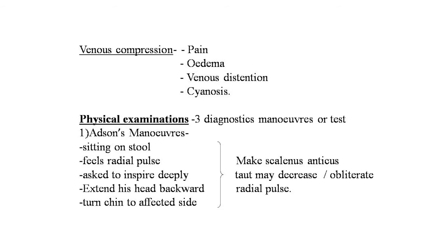Three diagnostic maneuvers are performed at rest. First, Adson's maneuver: the patient sits, the clinician feels the radial pulse, then the patient is asked to inspire deeply, extend the head backward, and turn the chin toward the affected side. Deep inspiration, neck extension, and head turning make the scalenus anticus muscle taut and may decrease or obliterate the radial pulse on the affected side. The test is positive if there is diminution or obliteration of the radial pulse.